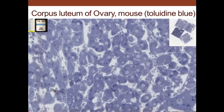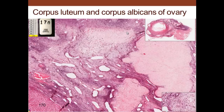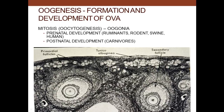After ovulation, the corpus luteum develops. It is composed of two cell types: the membrana granulosa and the theca interna. These make the large granulosa lutein cells or the smaller theca lutein cells, which have been luteinized by luteinizing hormone. There is also some remaining blood clot from the corpus hemorrhagicum right after ovulation. These cells have a large nucleolus, large euchromatic nucleus, lipid droplets, and abundant smooth endoplasmic reticulum associated with steroid production — producing progesterone and some estrogens. When the corpus luteum regresses, you get a corpus albicans.